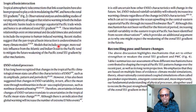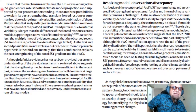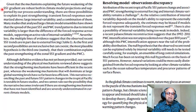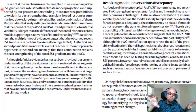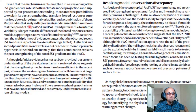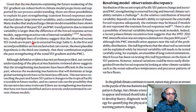Given that the mechanisms explaining future weakening of the SST gradient are robust both in climate model projections and supported by process understanding, there are three possibilities to explain its past strengthening. Models didn't capture the past, but the future projection is robust, so we have to explain why the past strengthened and why models failed. Transient forced responses, large internal variability, and a combination of them would have probably misled the models. Many studies analyzing large climate model ensembles have shown that the spread of past SST and PWC trend patterns due to internal variability is larger than the difference in forced responses across models.